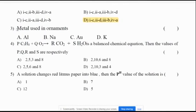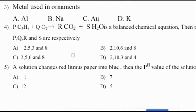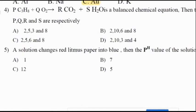Third question: the metal used in ornaments is Au (gold). Fourth question: C3H8 + 5O2 gives 3CO2 + 4H2O is a balanced chemical equation. The values of P, Q, R, and S are 1, 5, 3, 4 — so option A is the correct answer.